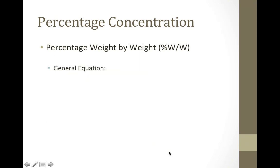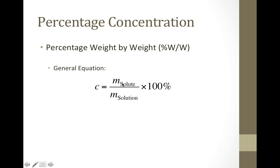There is one more type of percentage concentration: percentage weight by weight, or %W/W. The general equation is mass of solute divided by mass of solution times 100%. This is used when both the solute and the solution are solids. An example would be an alloy.